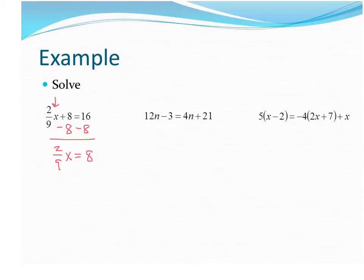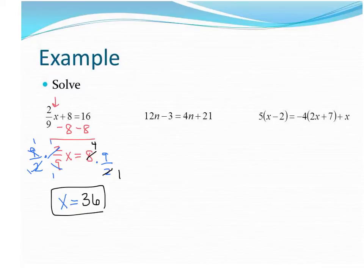And then the fastest way to get rid of that 2 ninths is to multiply by 9 halves, the reciprocal. Because when you multiply a number times its reciprocal, everything reduces to 1's, and you get 1x equals. And if we look here, we're going to reduce before we multiply. That's a whole lot easier than reducing later. So it looks like we get 36. Remember, the great thing about equations is you can check every answer. So I highly suggest you put x back in and you check it.